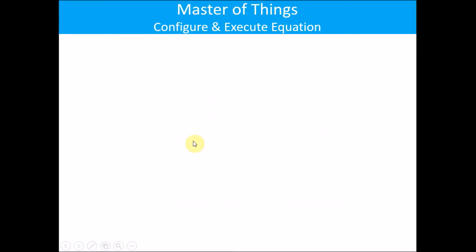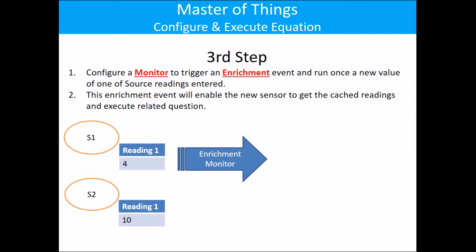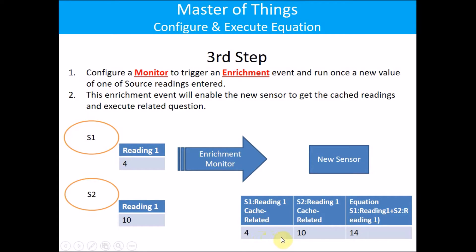The third step is to configure a monitor. This monitor will trigger an enrichment event that fires once a reading comes in from one of the sensors. This enrichment event will enable the new sensor to get the cached readings and execute the written equation. In our example, for S1 I get reading 1 and for S2 I get a reading as well. A reading from sensor 1, for example, will fire the enrichment monitor, which will get the new sensor, retrieve data from the cache, and calculate the equation. In the next part of this video, I will show you how to accomplish this in the Master of Things IDE.